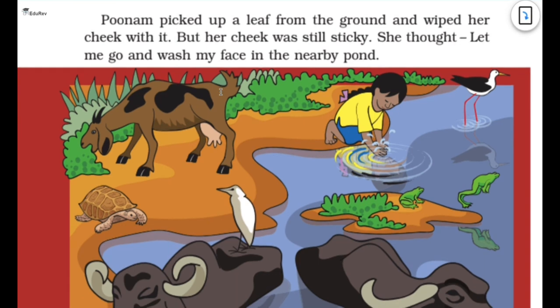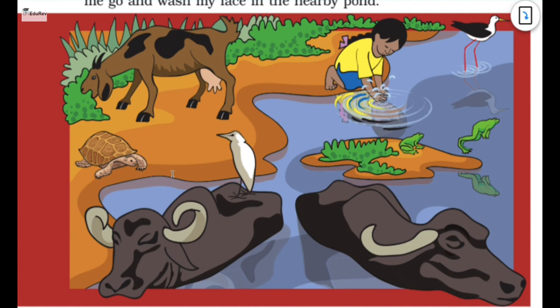Now Poonam picked up a leaf from the ground and wiped her cheek with it. But her cheek was still sticky. She thought, let me go and wash my face in the nearby pond. So she went to the nearby pond to wash off her face. And this is how the pond looked like. We can see goat, turtle, buffaloes, bird, frogs, and Poonam. So let's move forward.